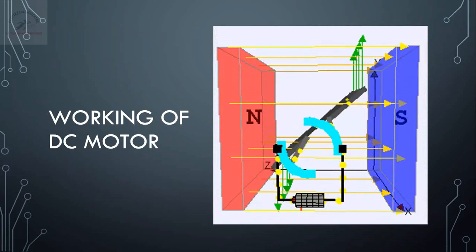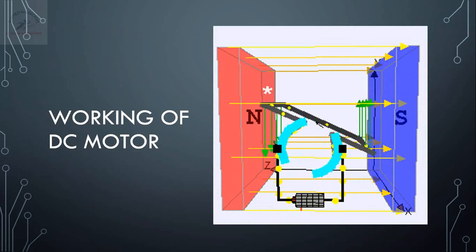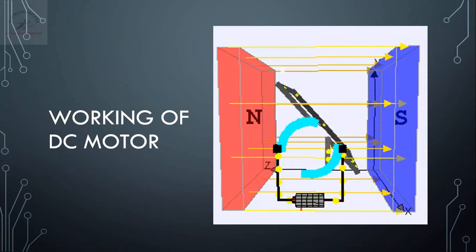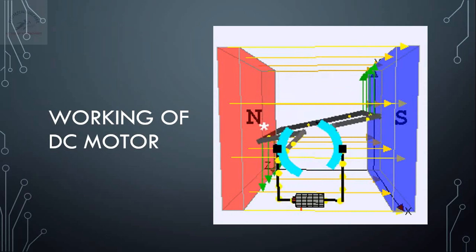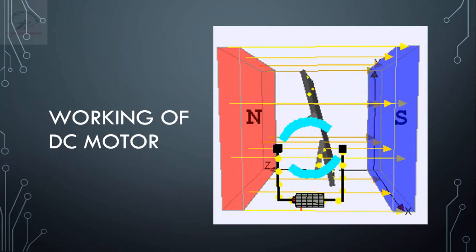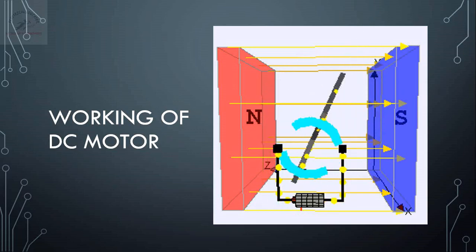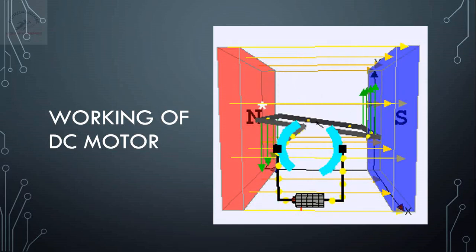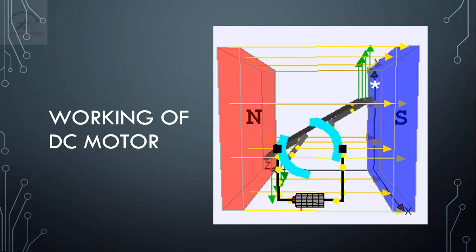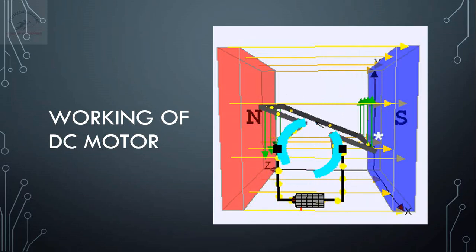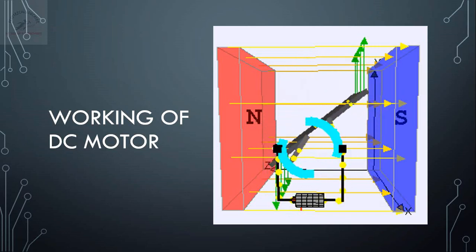Let us animate this figure. We see that the brushes and slip ring assembly are mainly responsible for changing the direction of current, such that the motor tends to rotate in a single direction only. Unless either the field or the direction of current is reversed, the motor will always continue to rotate in the same direction.